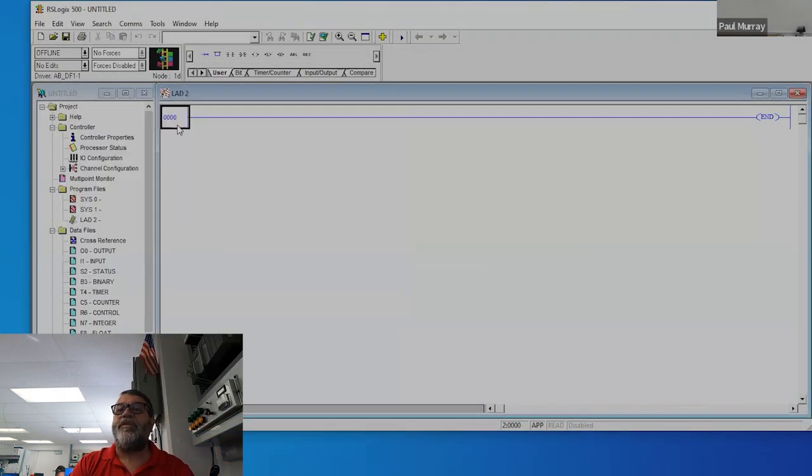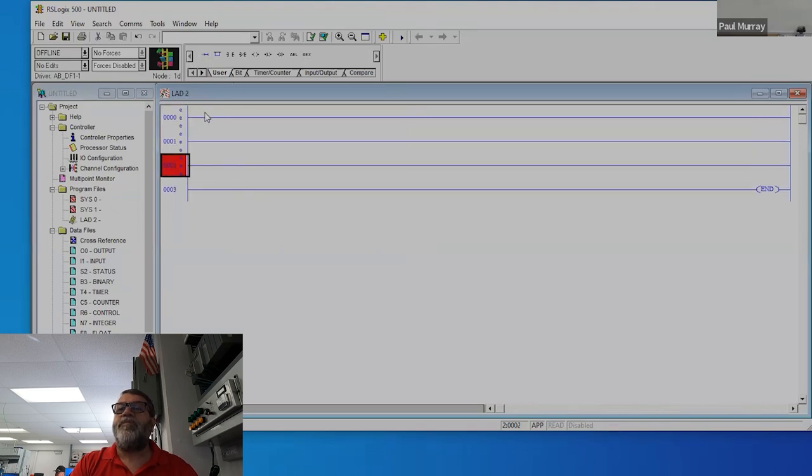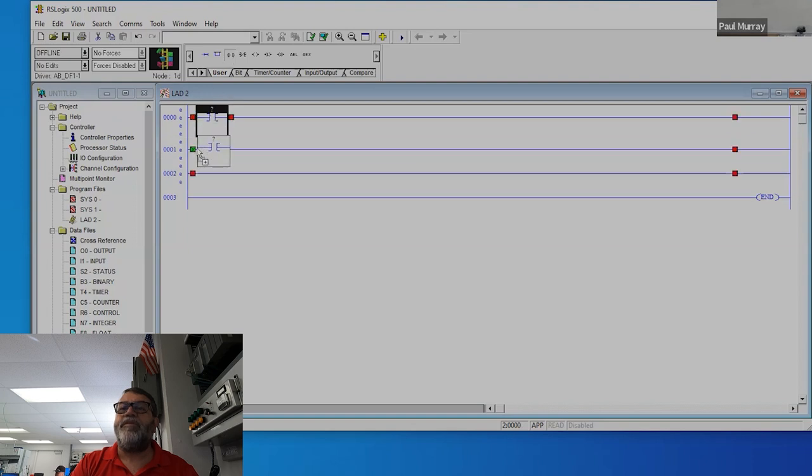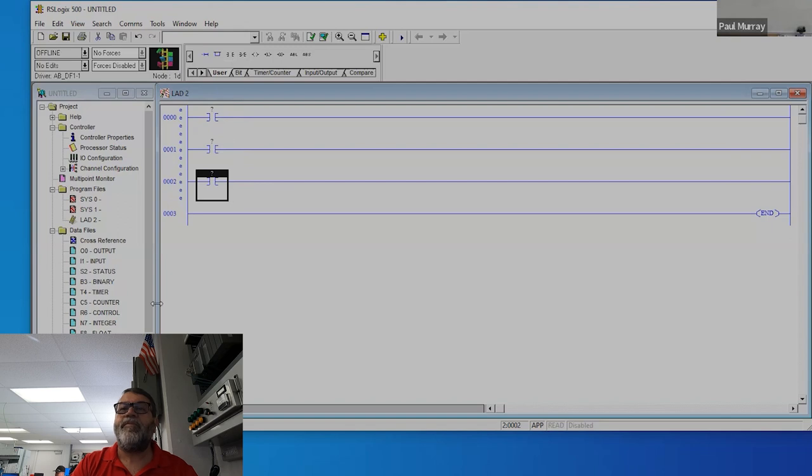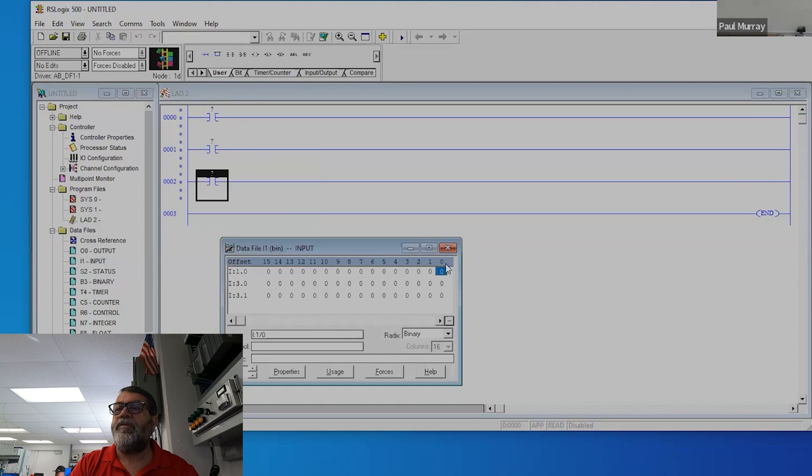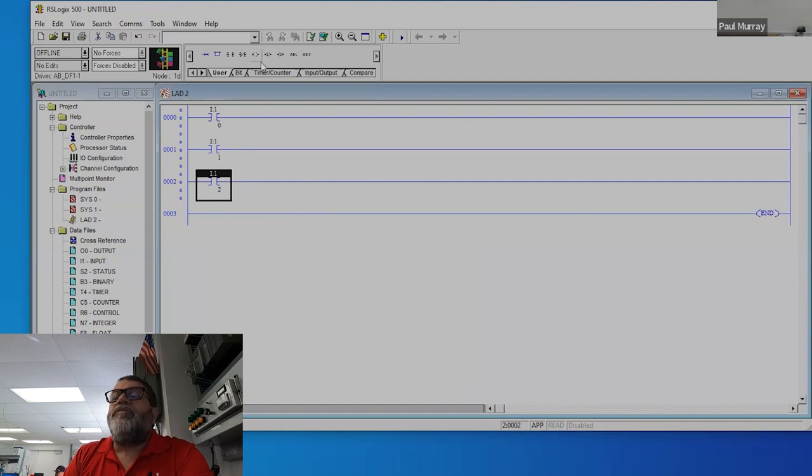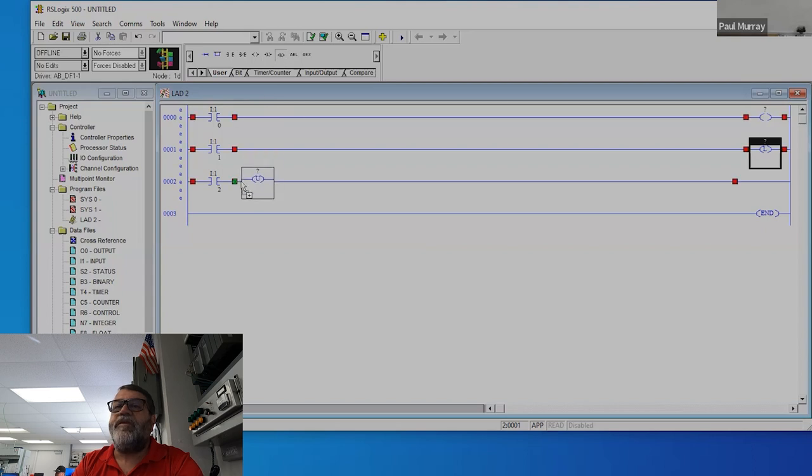I want to show you that on the software. I've got a project going here, and I'll put in my three rungs. I've got three inputs like I drew on the board. I'll just put some addresses in there. Now, if you look at the top here where these icons are, the first one is an output that we've been using. Can everyone see my screen? Good.